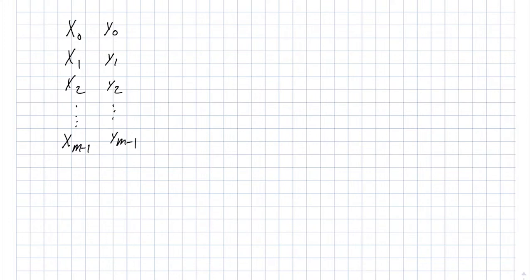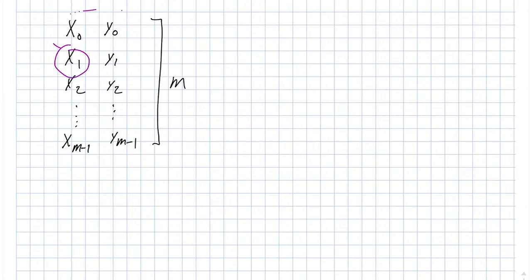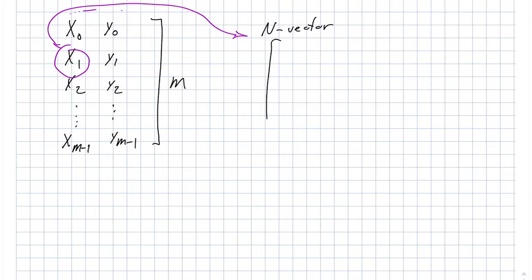So X M minus 1 and Y M minus 1. Even though we're assuming that Y is a scalar right now, in practice we can also imagine it as being a vector. Total of M of these things. Now, the inputs are vectorial in and of themselves. So one of these, say X1, is actually an N vector.